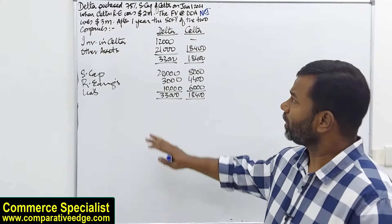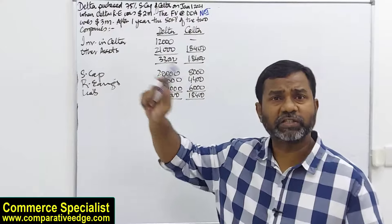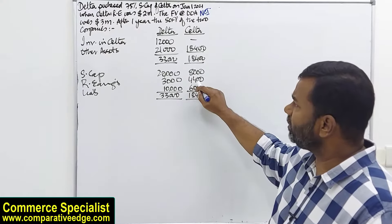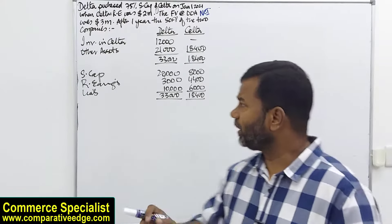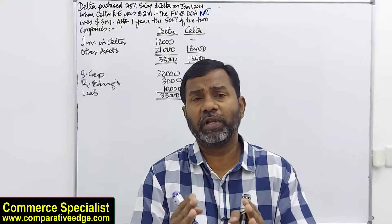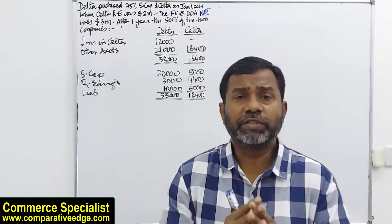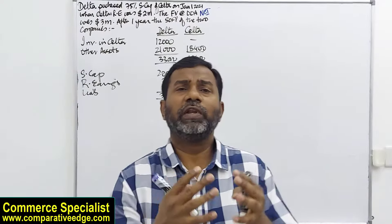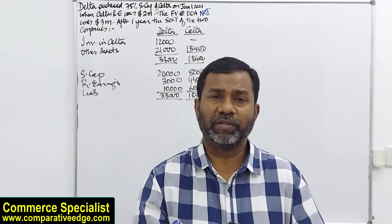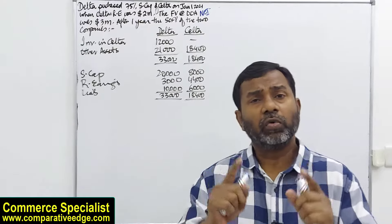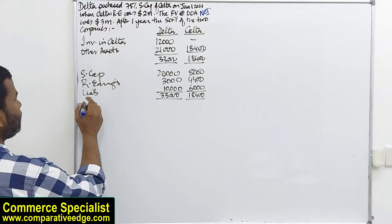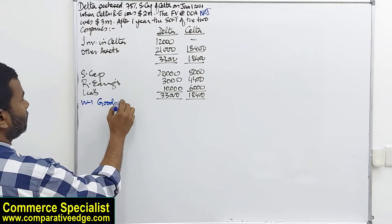Investment is given as 12,000 — what the parent has paid for 75 percent. The retained earnings shown in the question are one year after acquisition. At the date of acquisition the subsidiary had retained earnings of 2 million; after one year it is 4.4 million, meaning 2.4 million is post-acquisition retained earnings. We need to check for goodwill — goodwill is an amount paid over and above the fair value of the assets acquired, and is dealt with under IFRS 3 Business Combinations.